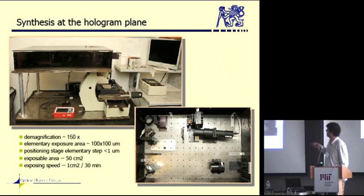This is how the device looks like. It's an older brother of the device you could have seen in the poster. It demagnifies the image about 150 times. The elementary exposure is about 100 times 100 micrometers. We can expose area up to about 50 square centimeters, and the speed is one centimeter per 30 minutes.